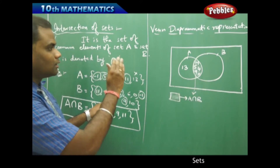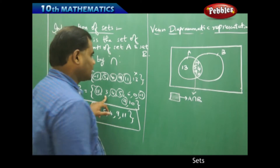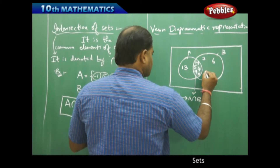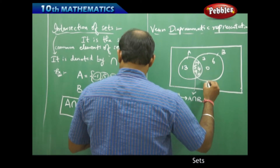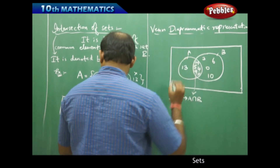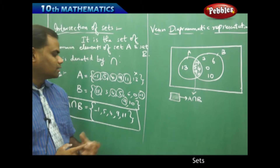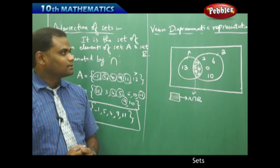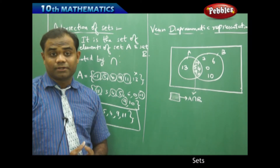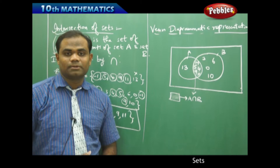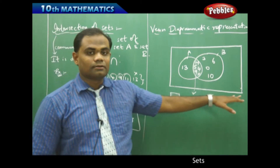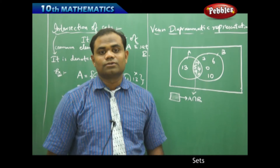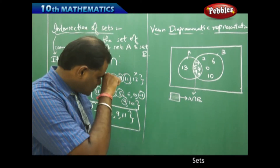The rest of the elements are written outside the common region but inside circle B, giving us 3, 6, 0, and 10, which are unique to the second set. This is how we understand the intersection of two sets in the Venn diagrammatic representation. We have now covered both the algebraic form and the Venn diagram form of intersection of two sets.